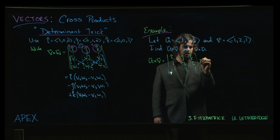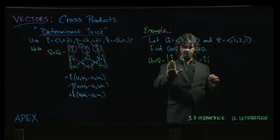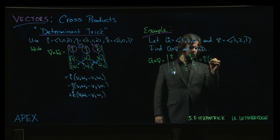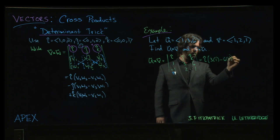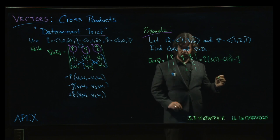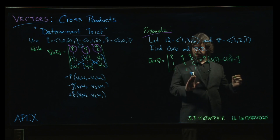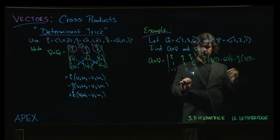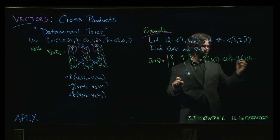And then we expand. So for i, we cover up the entries under the i and we do this 2 by 2 determinant here. 3 times 1 minus 6 times 2. Okay, and then we do minus j. We cover up the entries under the j. 1 times 1. Subtract 6 times minus 1.